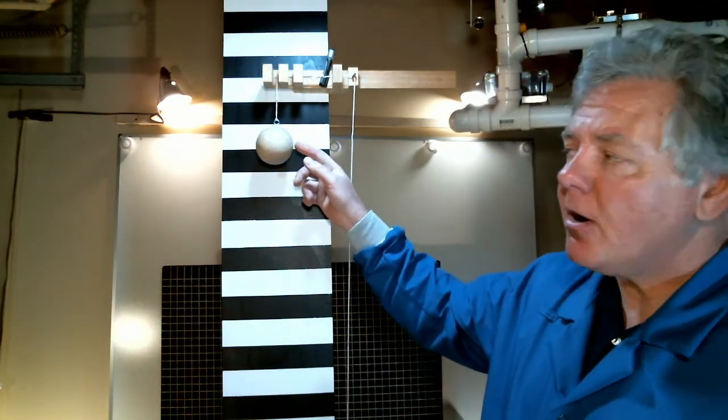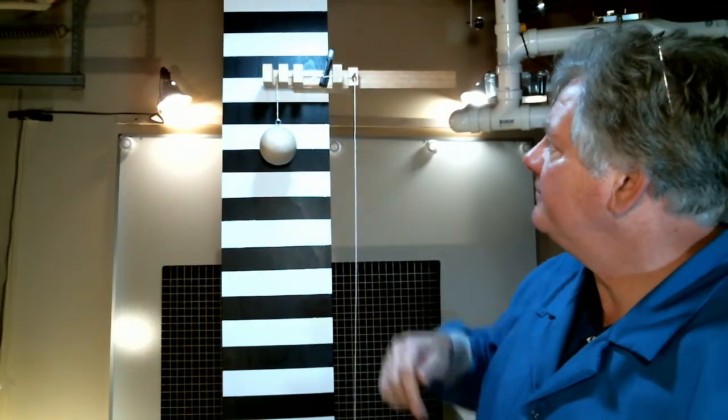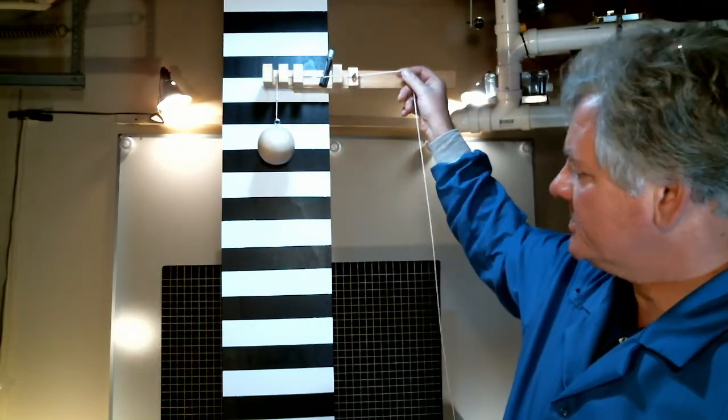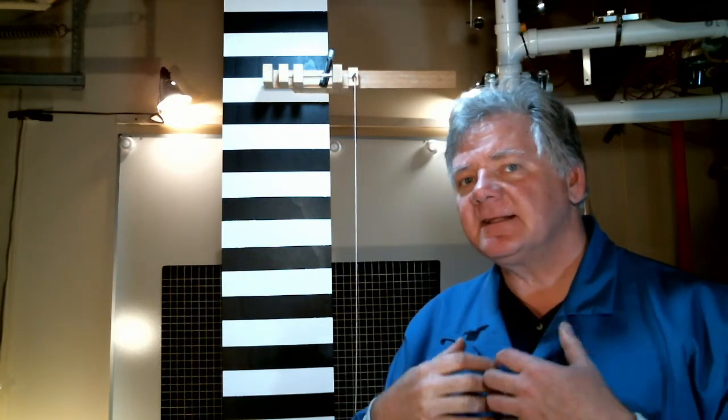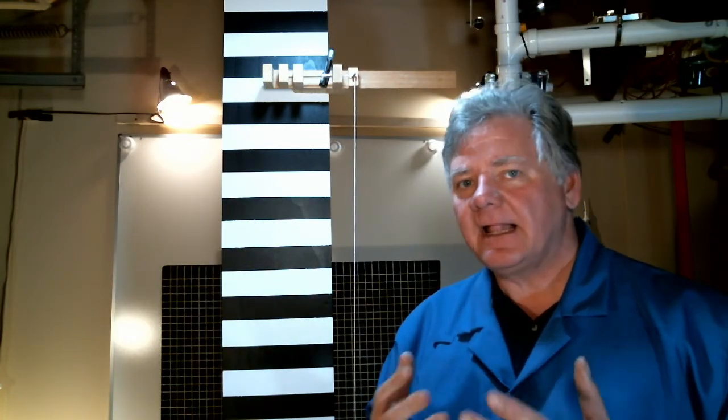All right, let's take a quick look at my simple test setup. Now what I have is a heavy wooden ball suspended from a release mechanism. And all I need to do is pull a string to release the ball. When I release the ball, I'll take the time it takes for it to hit the ground. And that will be my fall time.